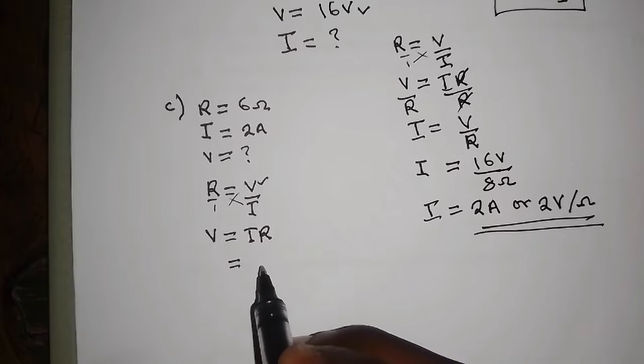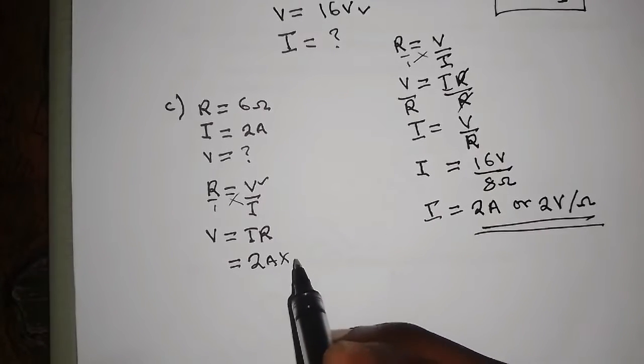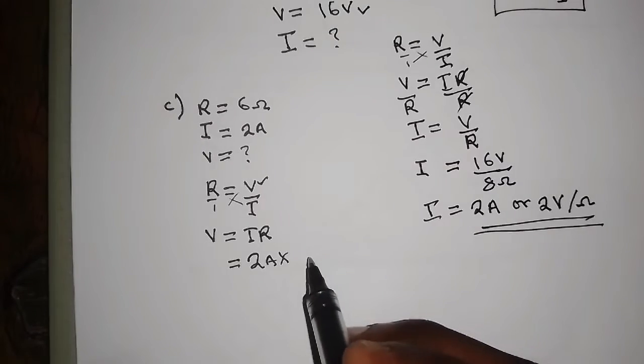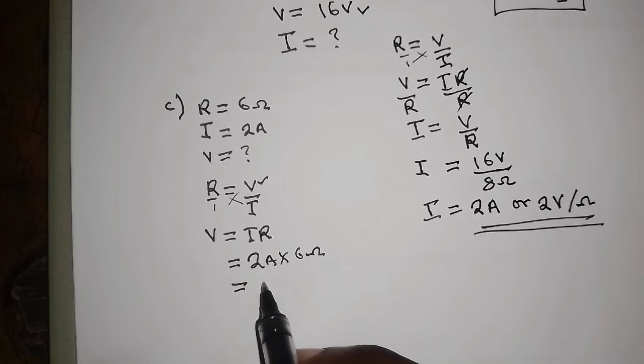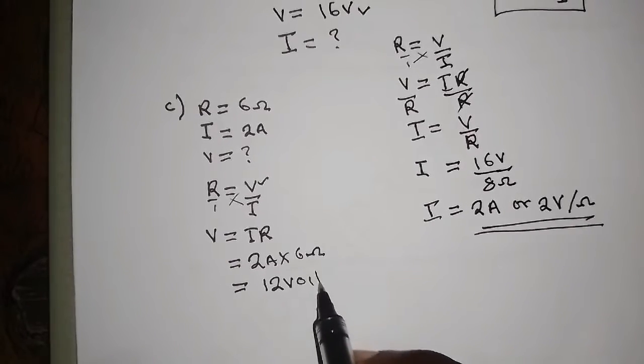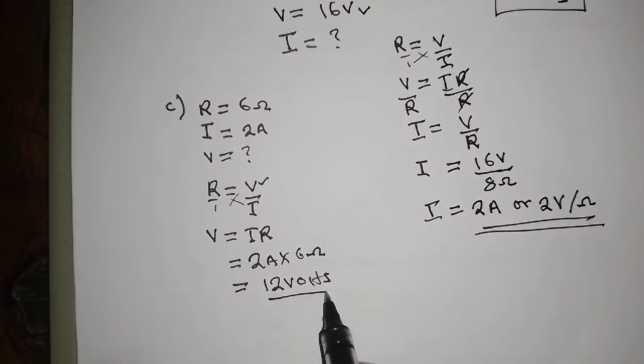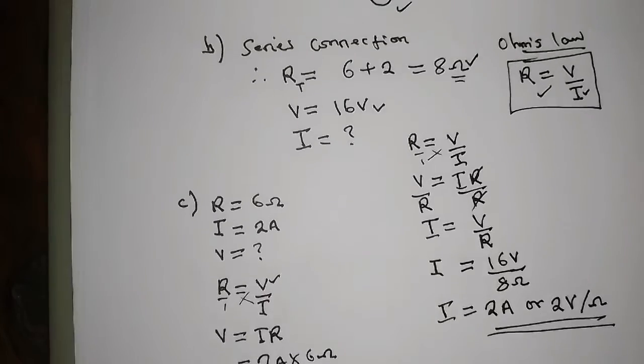So this time this is this. Then the voltage is just going to be, the current is 2 amps multiplied by the resistor is 6. And all you get is just 12 volts. So that's how you can go about answering this question.